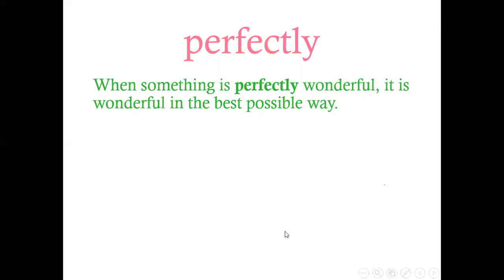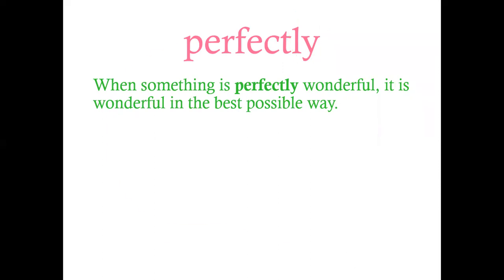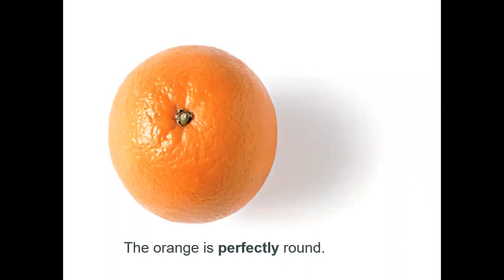Here we have a suffix at the end of the word. The suffix is a word part — some letters added to the end of a word that change its meaning. So perfectly means in a perfect way, just like slowly means in a slow way. Perfectly means in the best possible way. For example: the orange is perfectly round.